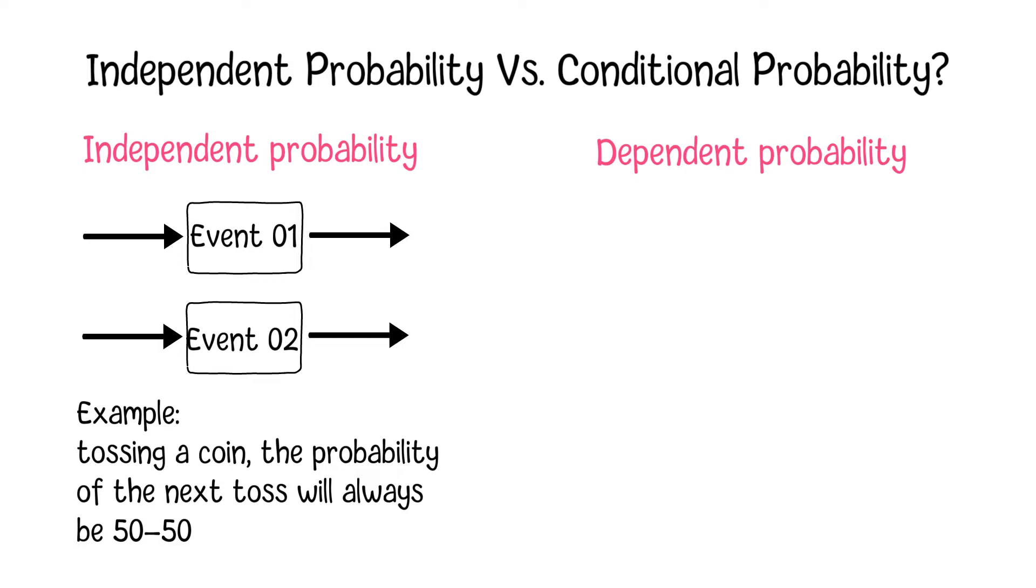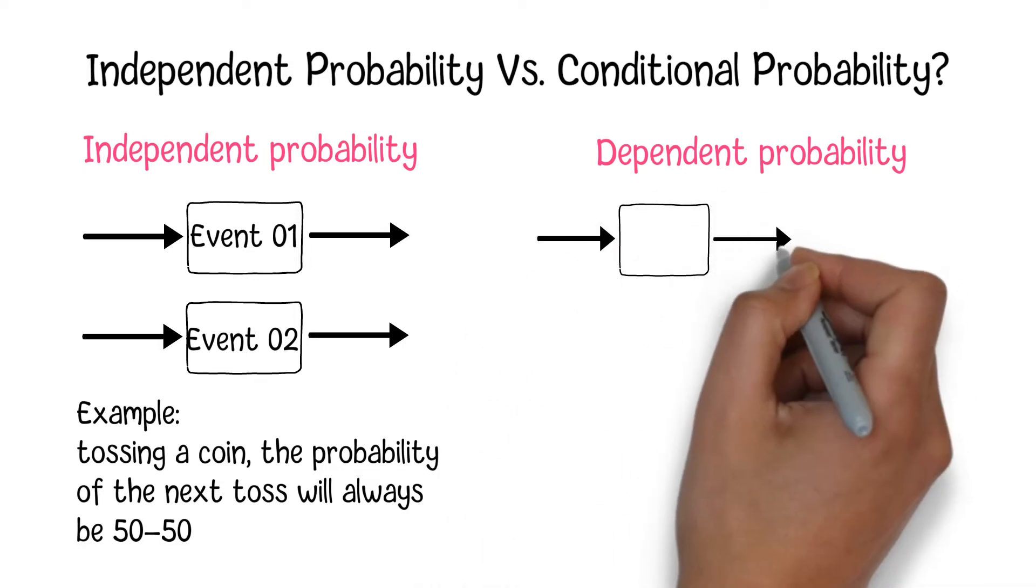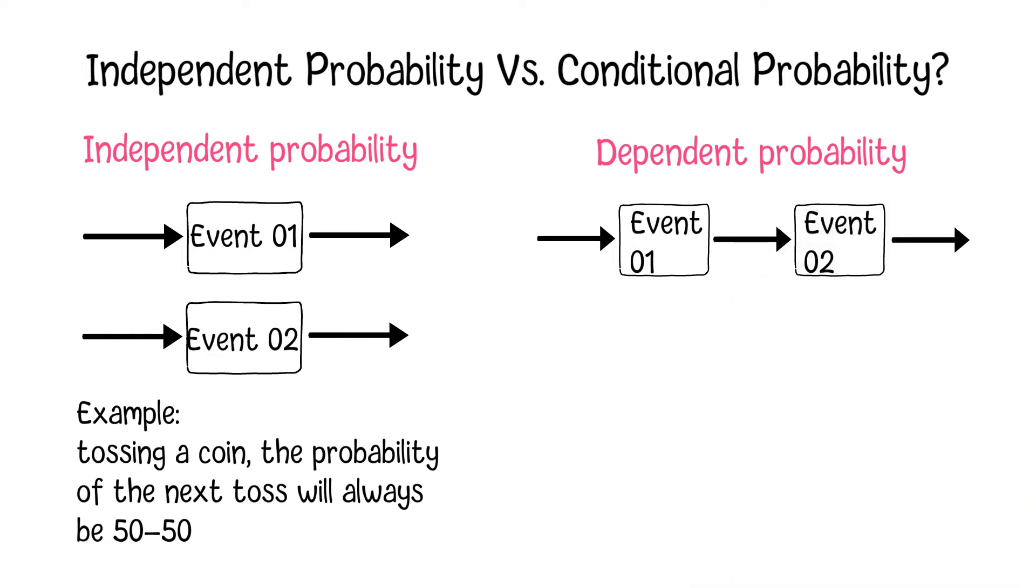In comparison, the Dependent Probability, also called Conditional Probability, will be dependent or affected by the previous events. It is just like a series of things linked together. The result from the previous events will affect the subsequent events.